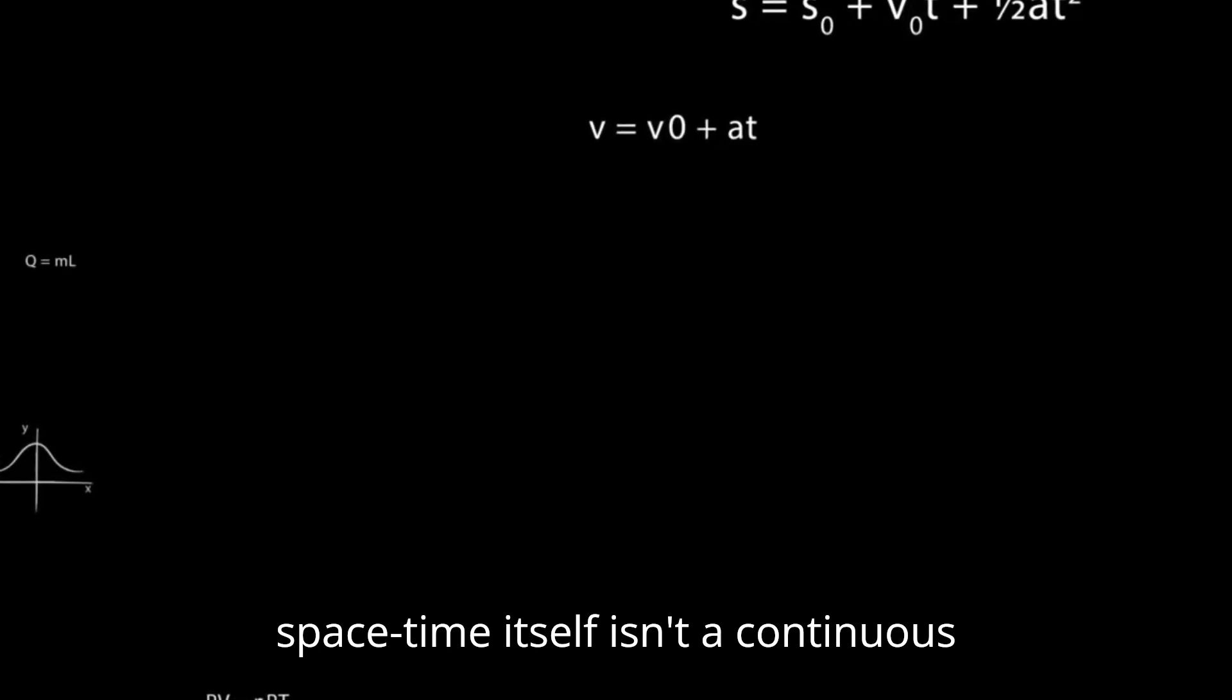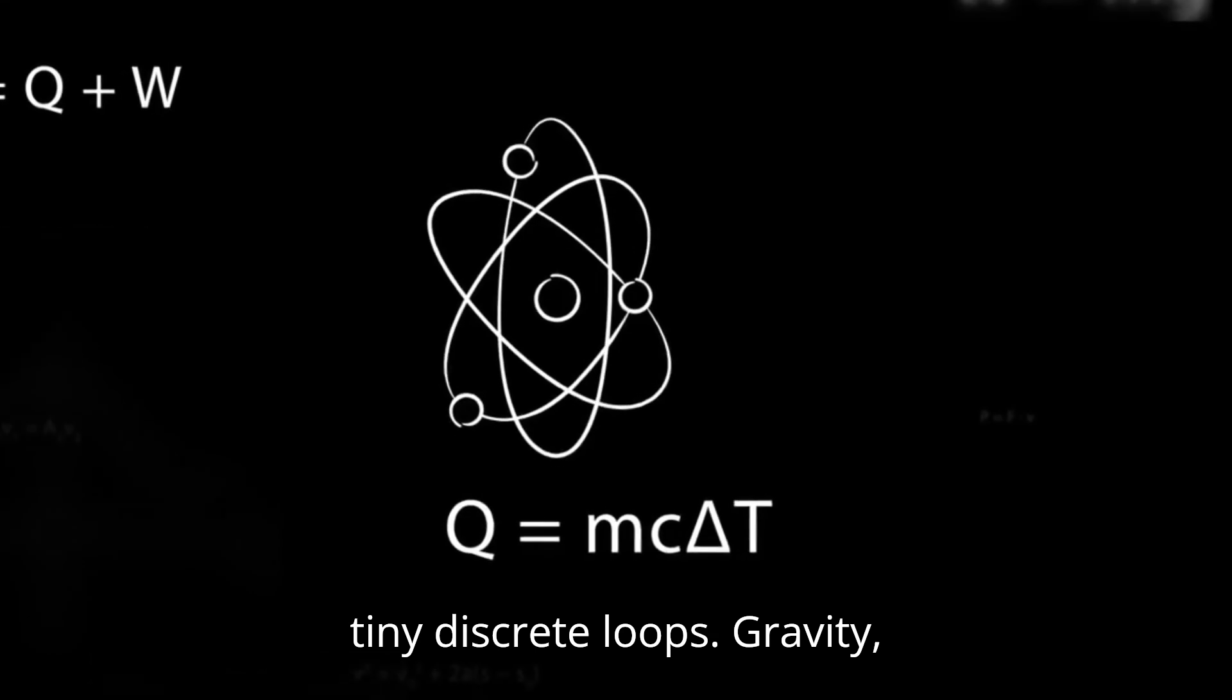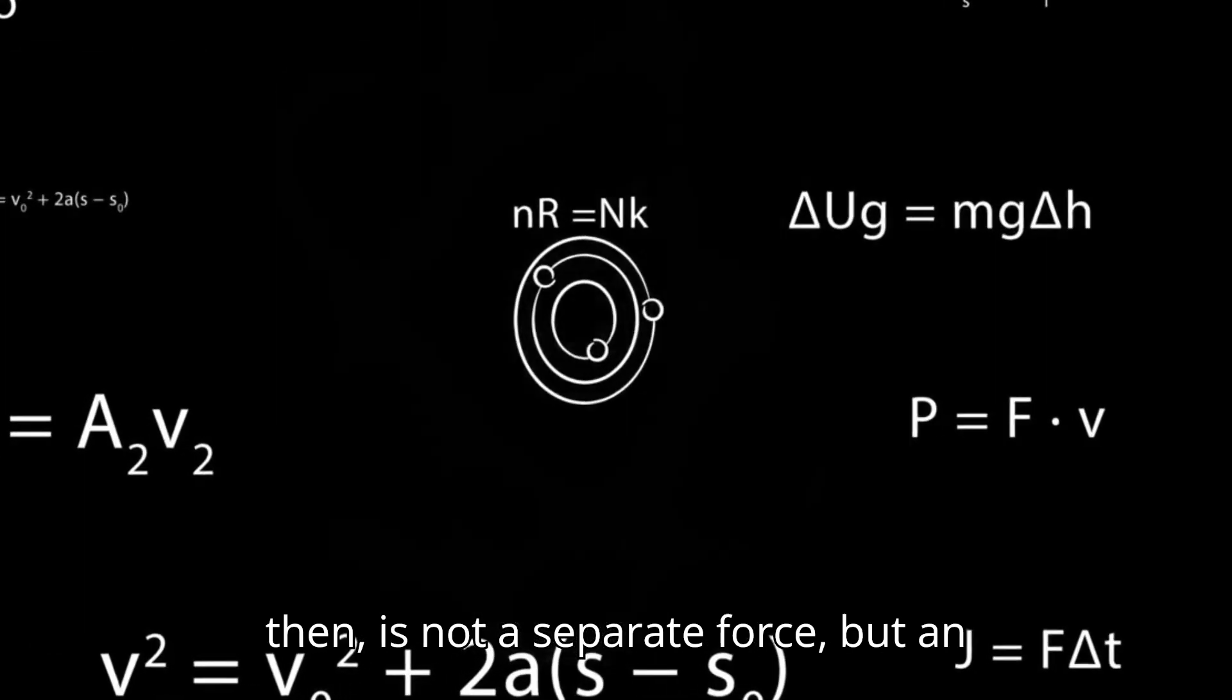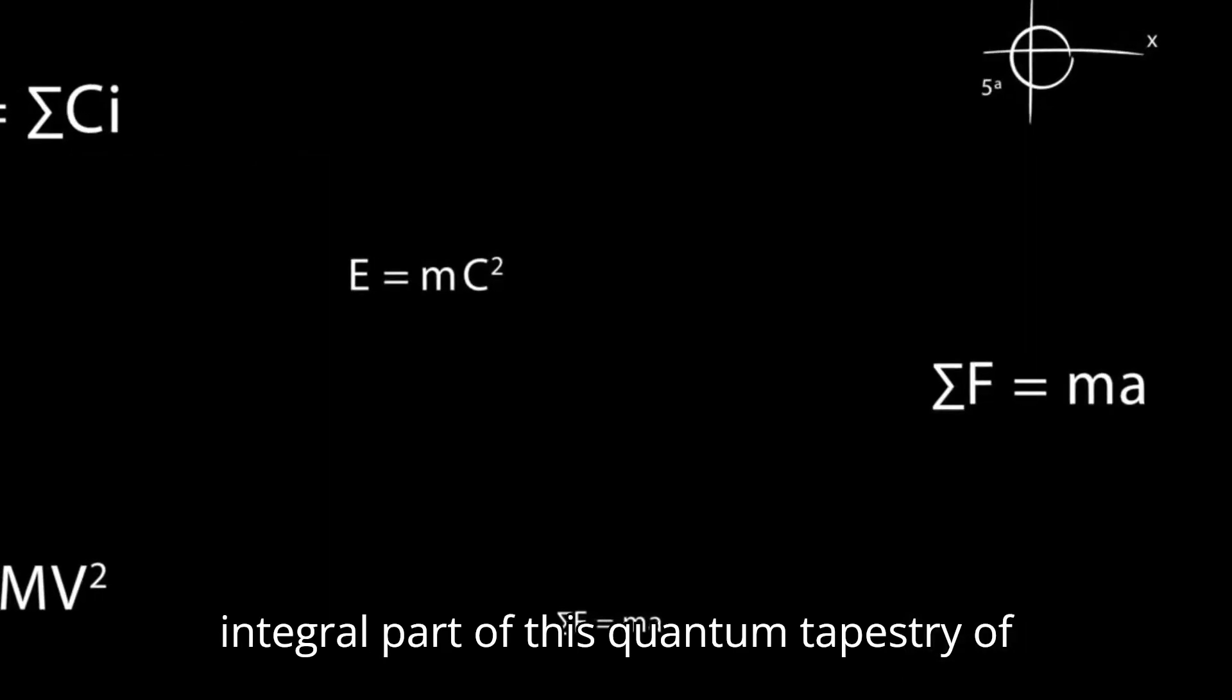In loop quantum gravity, for instance, spacetime itself isn't a continuous expanse. Instead, it's woven from tiny, discrete loops. Gravity, then, is not a separate force, but an integral part of this quantum tapestry of spacetime.